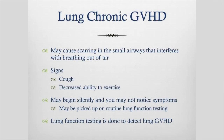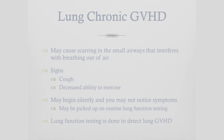Lung chronic graft versus host disease — called bronchiolitis obliterans in the non-transplant world — may cause scarring in the small airways that interferes with breathing out. Signs may be a cough or decreased ability to exercise, but often it begins silently and people don't notice any symptoms. It may just be picked up when your team does routine lung function testing after the transplant. Lung function testing is also done to confirm lung GVHD and to monitor how it's progressing, and we can also do CT scans and chest X-rays to check.